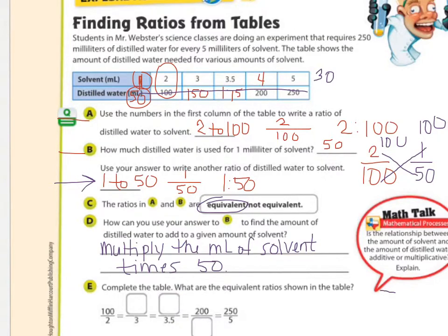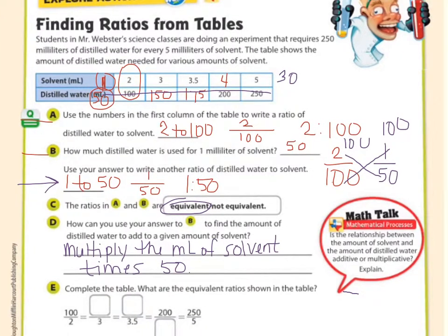Now, let's look at this question. Is the relationship between the amount of solvent and the amount of distilled water additive or multiplicative? How do you get from the solvent to the water? Did we add 50? Here, 2 plus 50 is not 100. What did we do to get from the top to the bottom? We multiplied times 50.